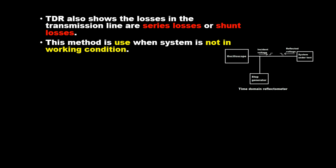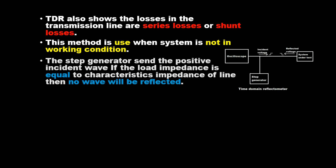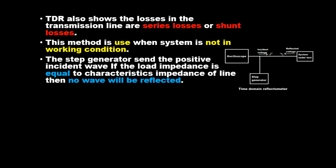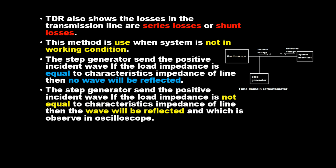This method is used when the system is not in working condition. The step generator sends a positive incident wave; if the load impedance is equal to the characteristic impedance of the line, then no wave will be reflected. If the load impedance is not equal to the characteristic impedance of the line, then the wave will be reflected, which is observed on the oscilloscope.